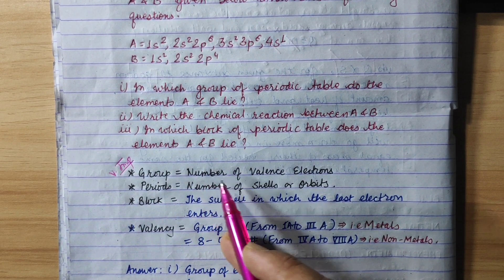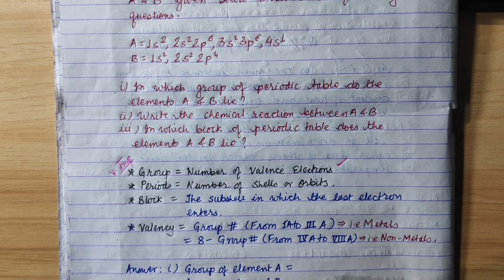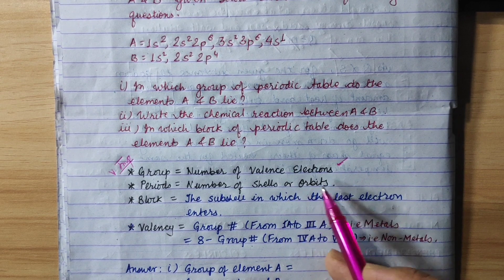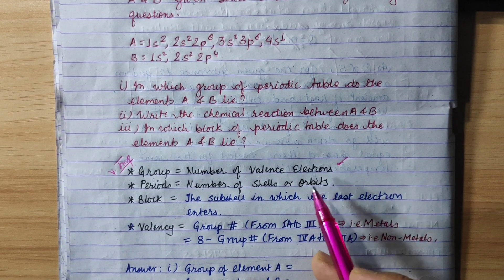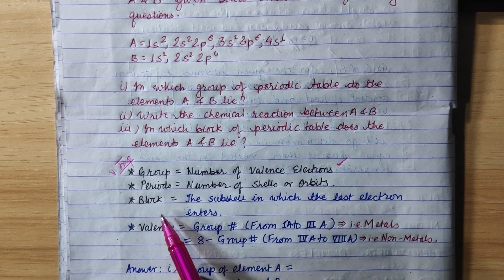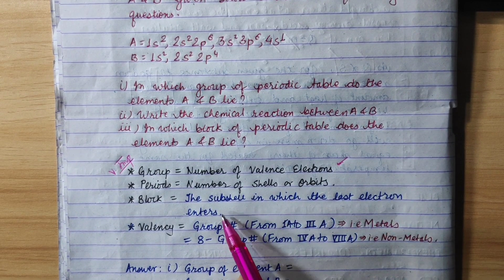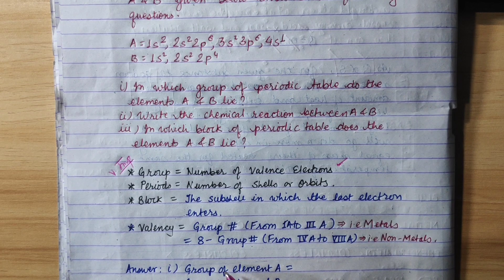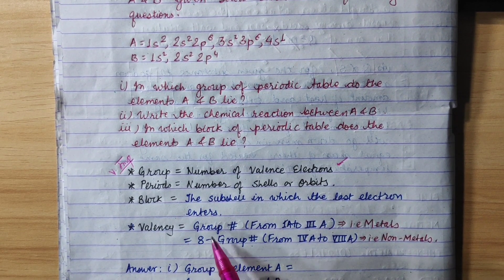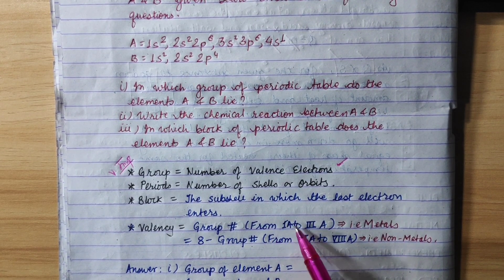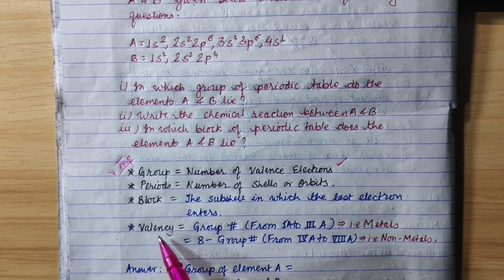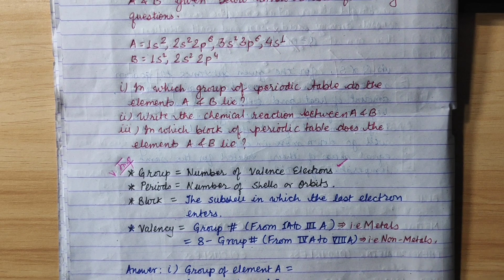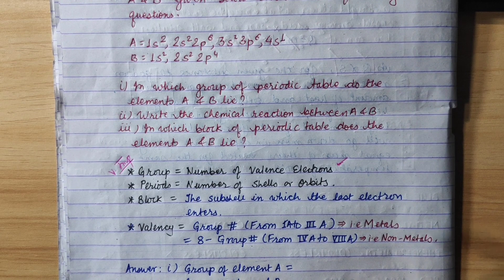The number of valence electrons is the same as the group number. Periods mean the number of shells or orbits. The sub-shell in which the last electron enters determines the block. The number of valence electrons equals the group number: group 1A is 1, group 2A is 2, group 3A is 3.